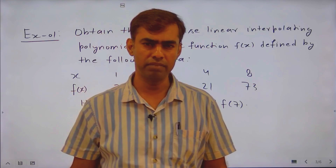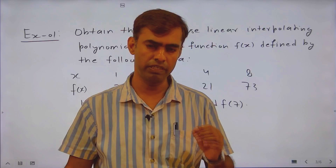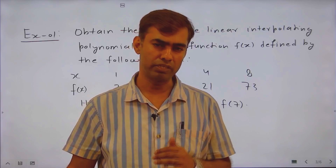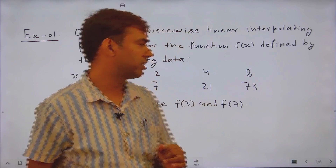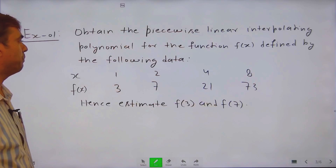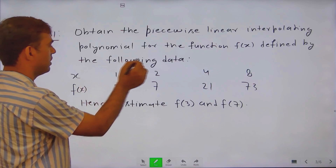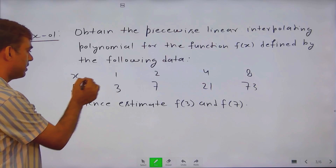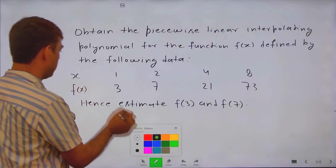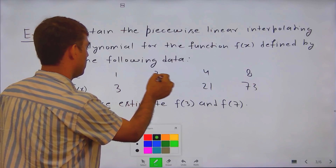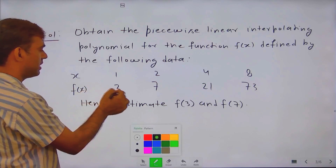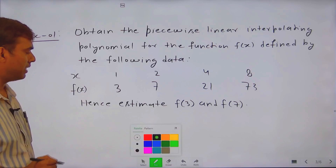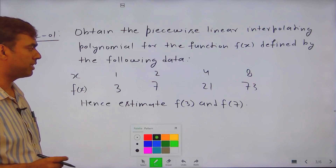We are going to solve one numerical example in order to fit a piecewise linear interpolating polynomial for a given set of data. The problem is: obtain the piecewise linear interpolating polynomial for the function f(x) defined by the following data. The values of x are 1, 2, 4, 8 and f(x) values are 3, 7, 21, 73. Hence, estimate the value of f(3) and f(7).